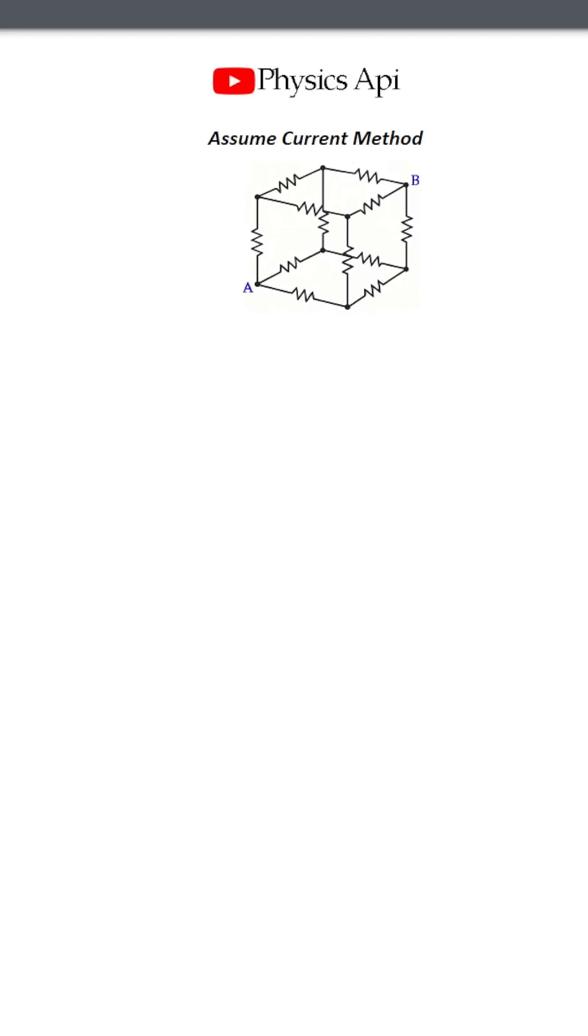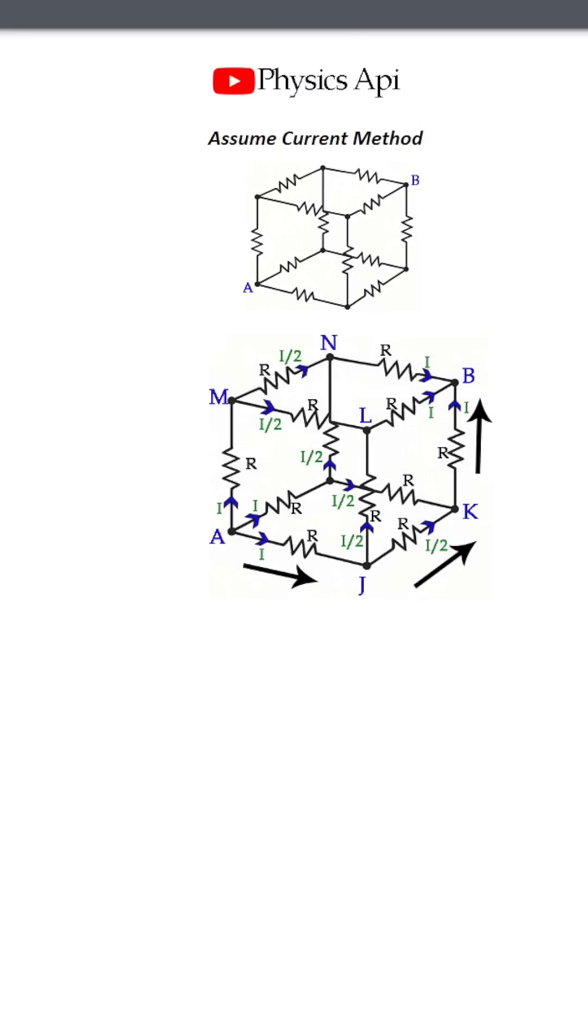In this cube-shaped network, each edge is a resistor with resistance R. The system is symmetric about the axis from A to B. We are going to find the equivalent resistance using the assumed current method.